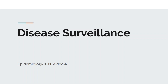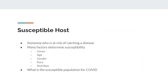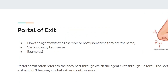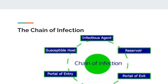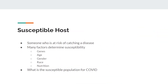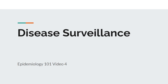I mentioned this in the last video that this would be our next topic. Just a quick recap of what went on in the last couple weeks: we talked about agents, the chain of infection, and the epidemiological triad. If you haven't watched that video or need a refresher, please go back and watch it. And without further ado, we'll get into probably my favorite part of epidemiology: surveillance.